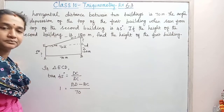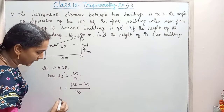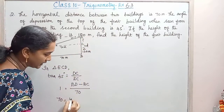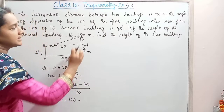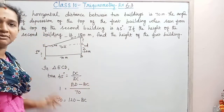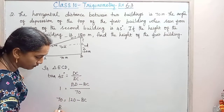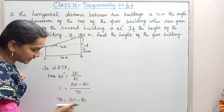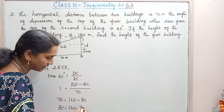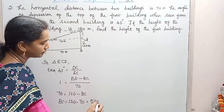EC is 70 here. When we cross-multiply, we get 70 equals BD minus BC, that is 120 minus BC. We don't know BC. Simplifying — bringing BC to the other side, BC equals 120 minus 70, which is 50 meters.